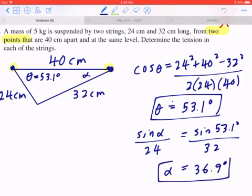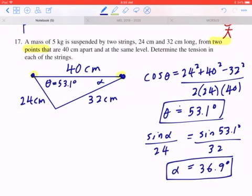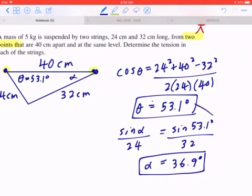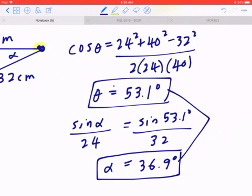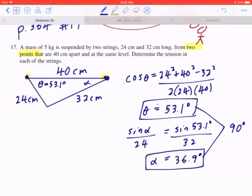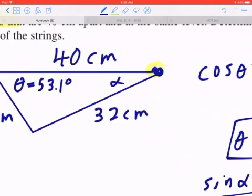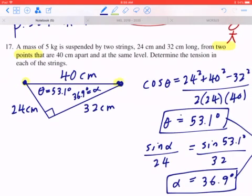So even if you didn't know the shortcut by inspection, you can tell just by looking at these two numbers. Because 53.1 and 36.9 add up to 90. So you can go back and say alpha is going to be 36.9 degrees, which means this is going to be a 90 degree angle.